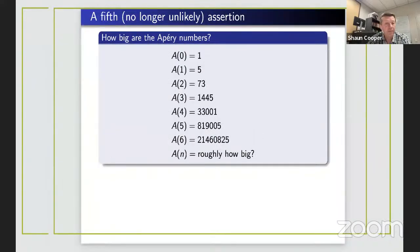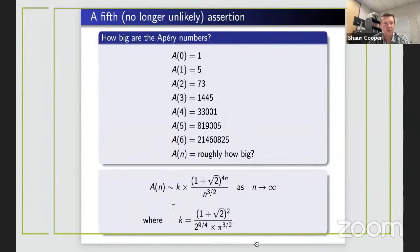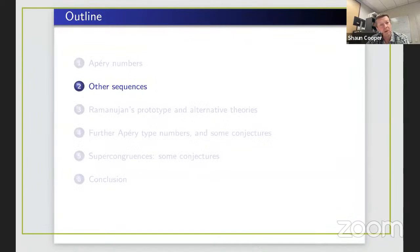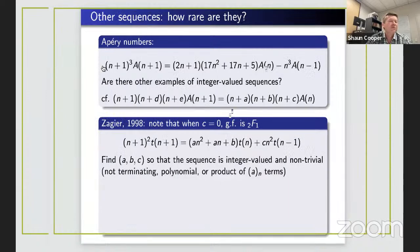Another question is how big are these numbers. There's an asymptotic formula: they grow roughly like (1 + √2)^(4n) times a constant k. In view of these interesting properties, one question is whether there are other sequences with similar properties.